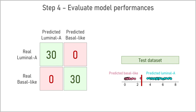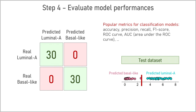Finally, we compare the predictions with the real subtypes to evaluate model performance. In our case, the model predicted correct molecular subtypes for all samples, as we can see in the contingency table. There are also other metrics that can be calculated to evaluate performance, for example accuracy, precision, recall, F1 score, and others. These metrics allow us to compare the performances of different machine learning models and to select the best one. The metrics are calculated on the test dataset only, which has never been used in the training process.